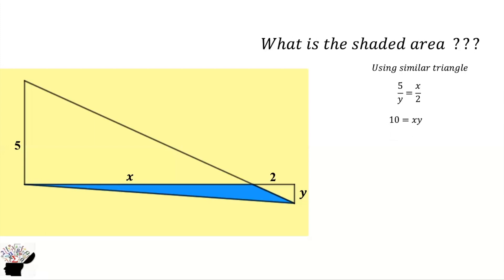Now how can you find the area of this shaded portion? The area will be the area of this whole triangle, the bigger triangle, minus the area of the small triangle. So the area of this bigger triangle is half, the base is 2 plus x, and the height is y, minus half base—the base is 2 and the height is y.